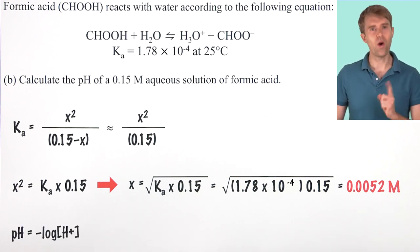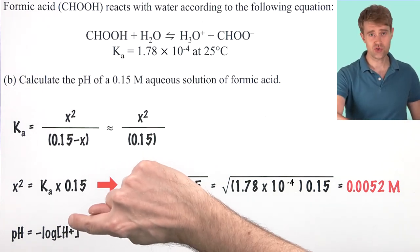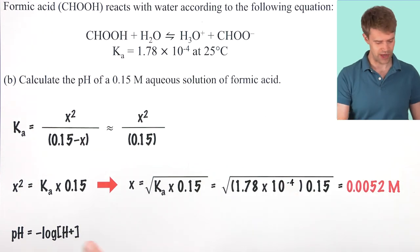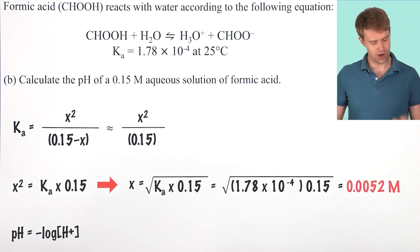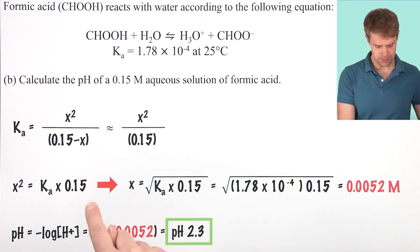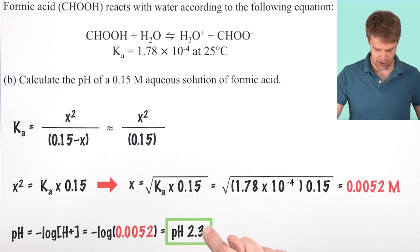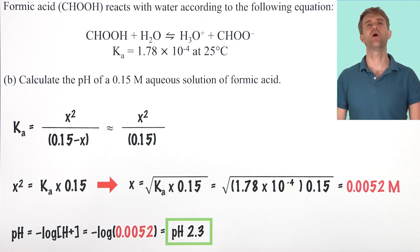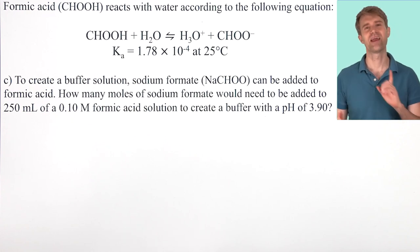Now, remember what we were solving for. The value of X is the concentration of H plus or the concentration of hydronium. So, now we can take this and we can put it into our pH equation. We put this in for H plus. And when we do this math, the negative log of the H plus concentration, there is our pH value 2.3.